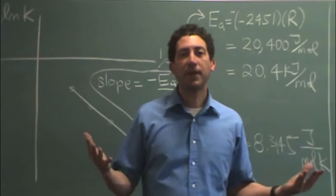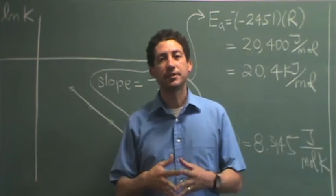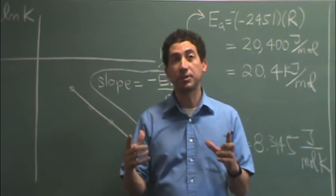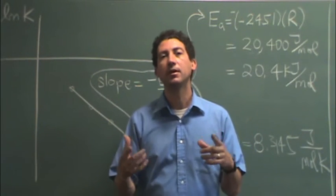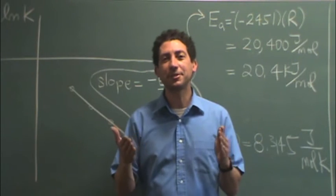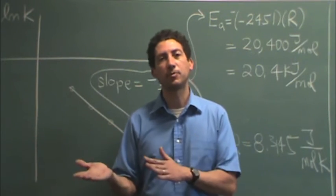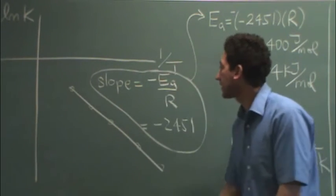Remember that I'm trying to find activation energy. And so I had this whole table that we generated. And now I'm going to plot natural log of k versus 1 over T because I want to get the slope, and the slope will lead me to the activation energy. Take a look at this.